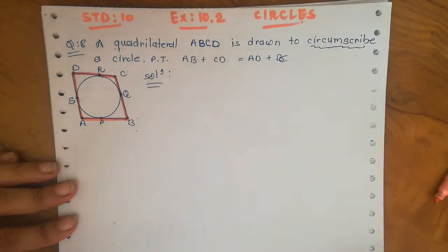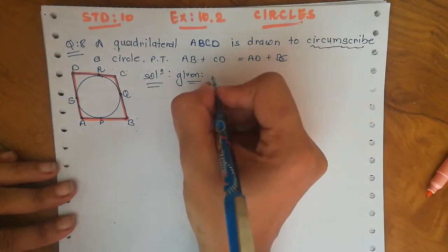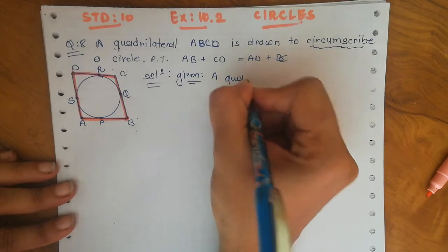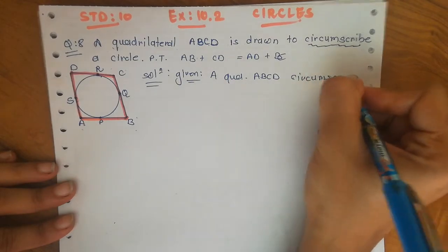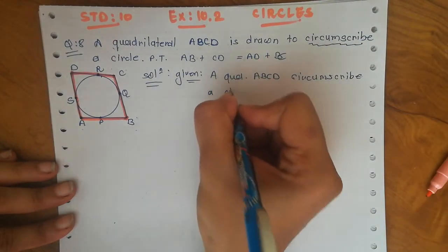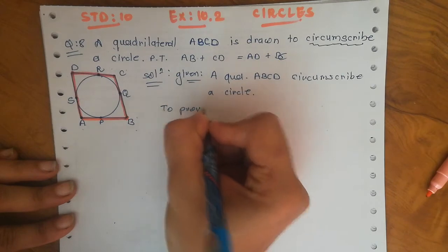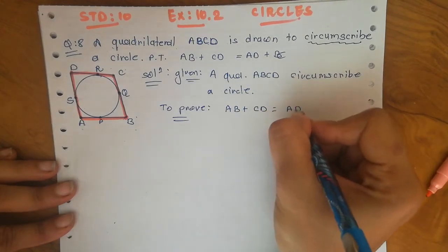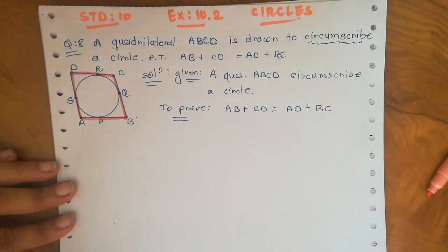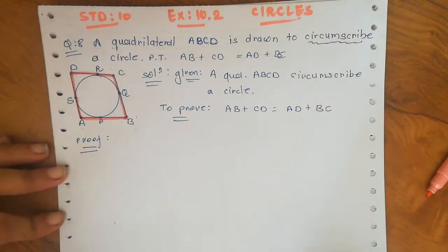First let us write what is given: a quadrilateral ABCD circumscribes a circle. And what we need to prove is that AB plus CD equals AD plus BC — the sum of the opposite sides of the quadrilateral equals the sum of the other two sides.